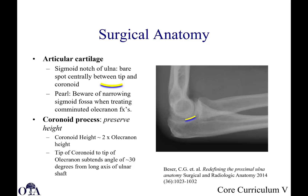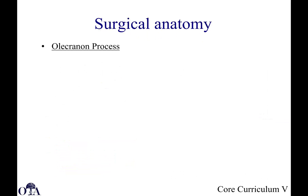Regarding articular cartilage at the olecranon, a couple of things to keep in mind. The sigmoid notch of the ulna has a bare spot centrally between the tip of the olecranon and the coronoid. Beware of narrowing the sigmoid fossa when treating comminuted olecranon fractures — you don't want to shorten the normal articular surface. The coronoid process height should be about roughly two times the olecranon height. The tip of the coronoid to the tip of the olecranon subtends an angle of about 30 degrees from the long axis of the ulnar shaft.